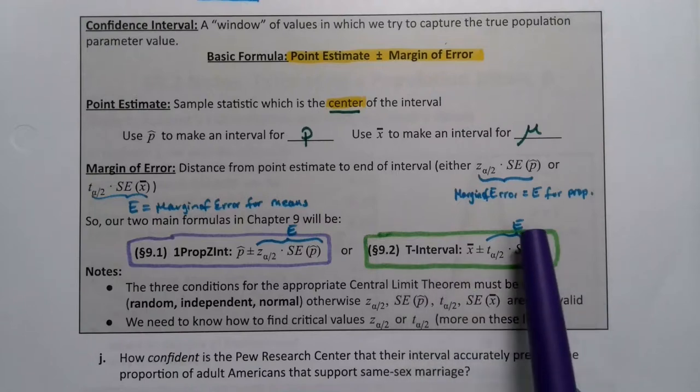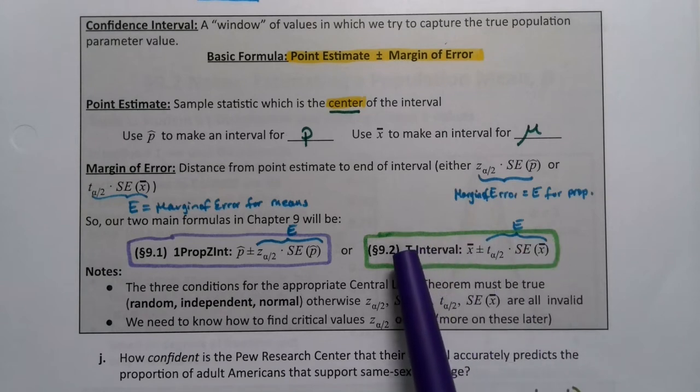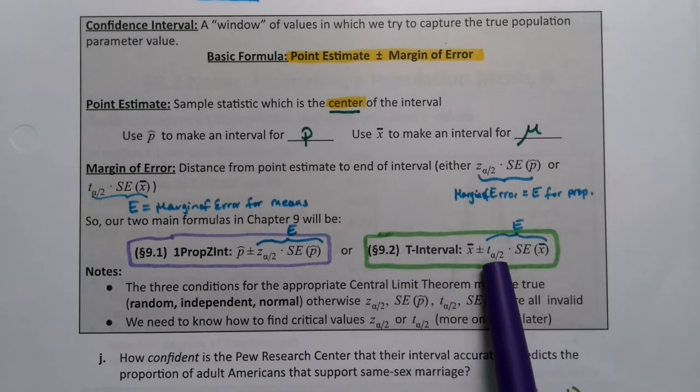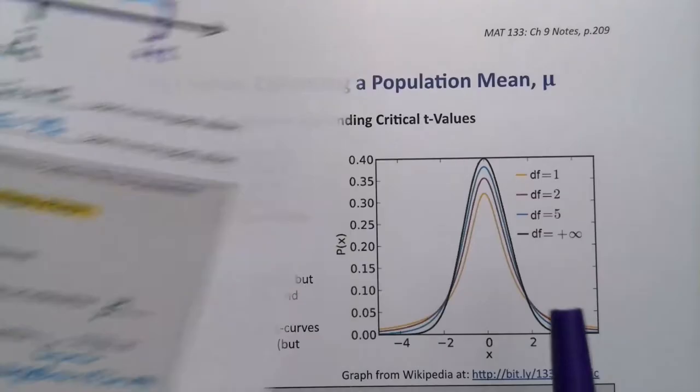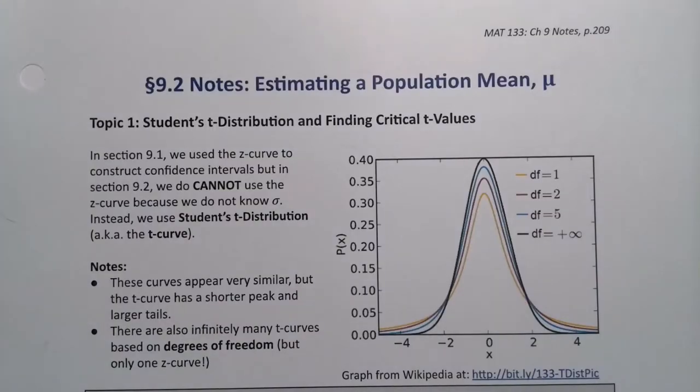Recall that in section 9.1 we saw a preview of the interval we're going to be working with in section 9.2. In that interval we can see this little t alpha over 2, which looks a lot like z alpha over 2, but it's the letter T. So we need to spend some time learning about the t distribution.